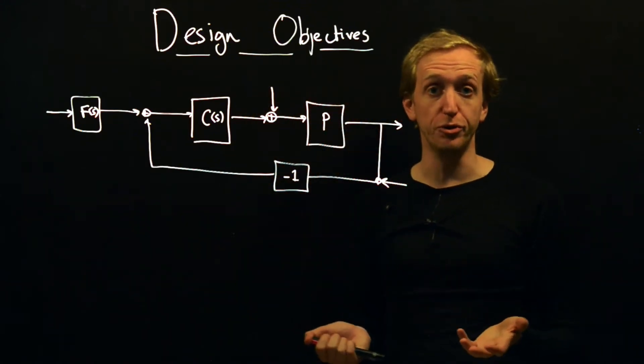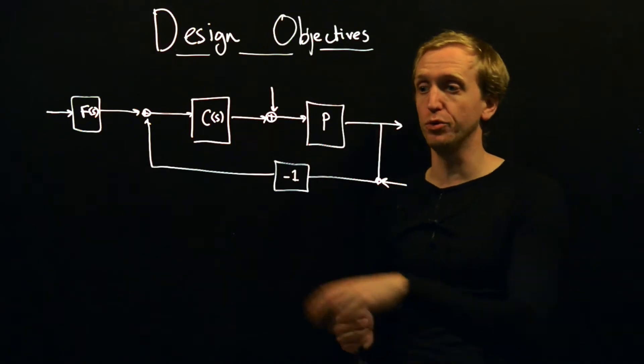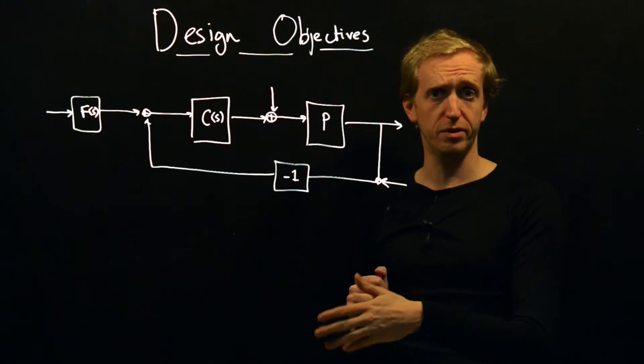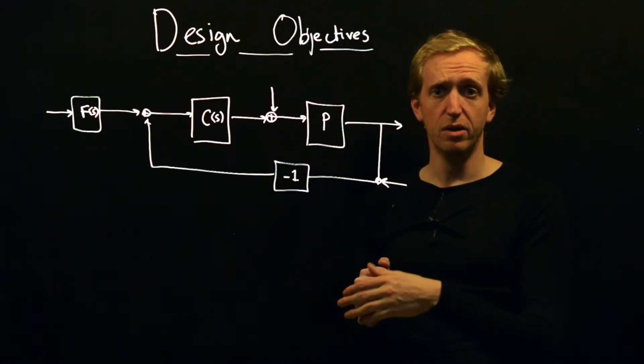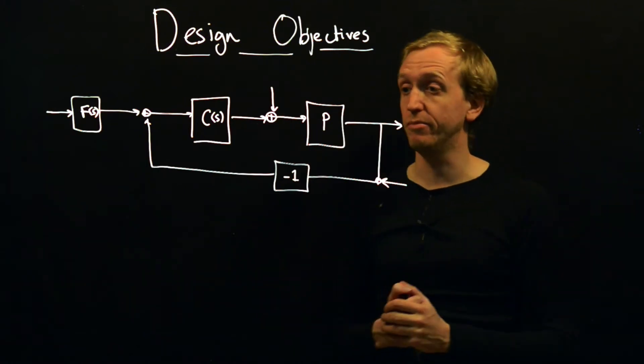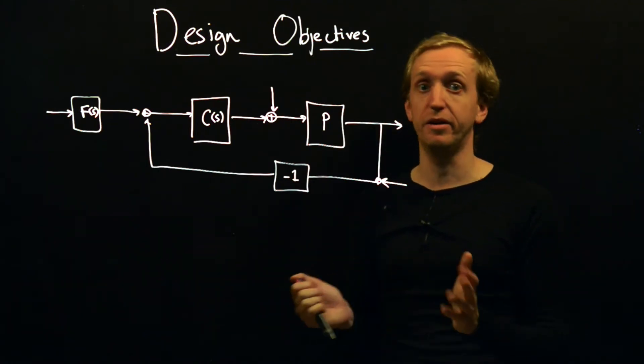We'll introduce some common design objectives and try to understand how to design various bits of this feedback loop in order to meet those objectives, and if there are any fundamental limits that might be preventing us from meeting whatever objectives we like.